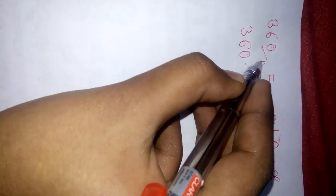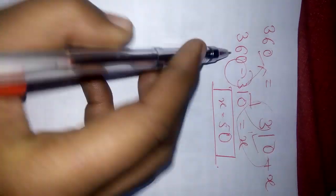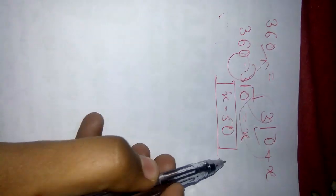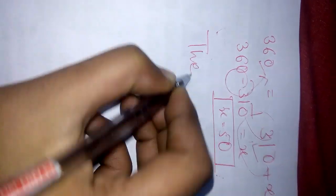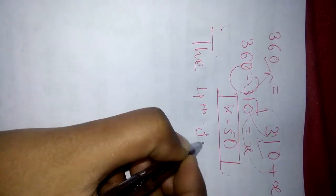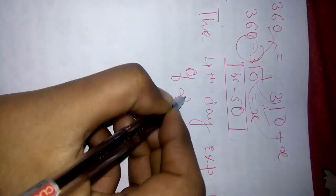This is in plus. So I am going to take it here, and it will become minus. Subtracting both of them, I will get X is equals to 50. So the 4th day expense was of Rs. 50.